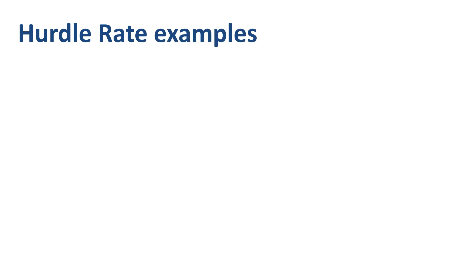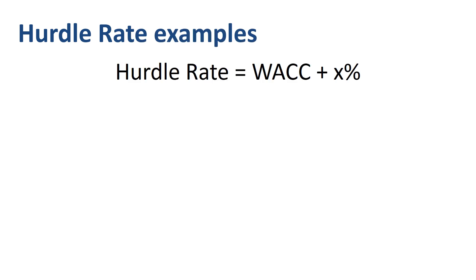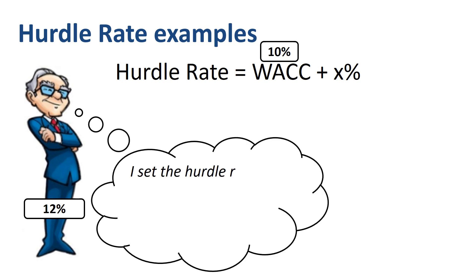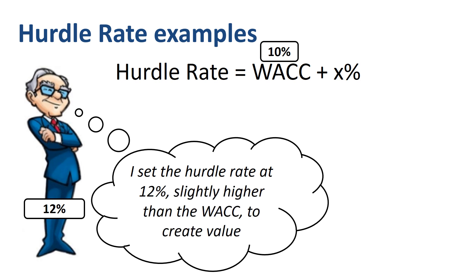Here are two examples of approaches that the CFO might take. The hurdle rate tends to be set at the WACC plus a couple of percentage points. Let's say the WACC for the company in this example is 10%. The CFO in blue sets the hurdle rate at 12% — WACC plus 2 percentage points — to create value for the company. He only accepts project proposals if they promise an IRR of 12% or more; 11% would not be good enough, as it's higher than the WACC but lower than the hurdle rate.